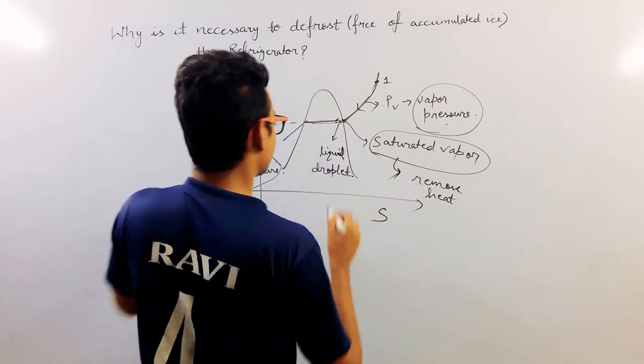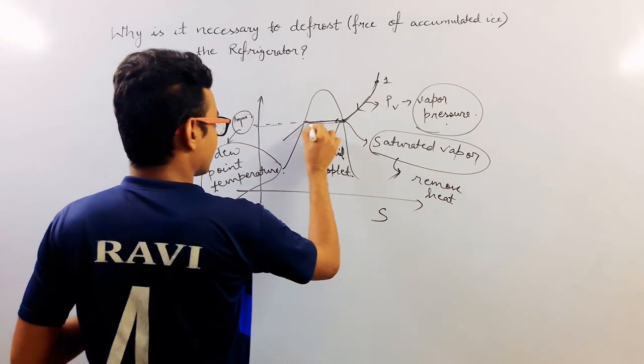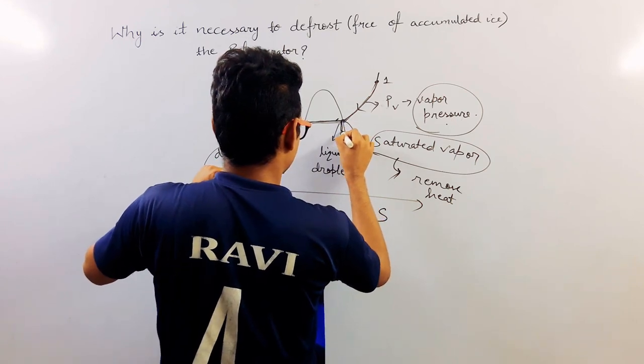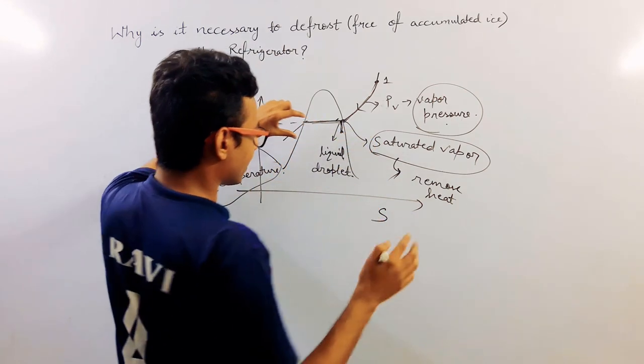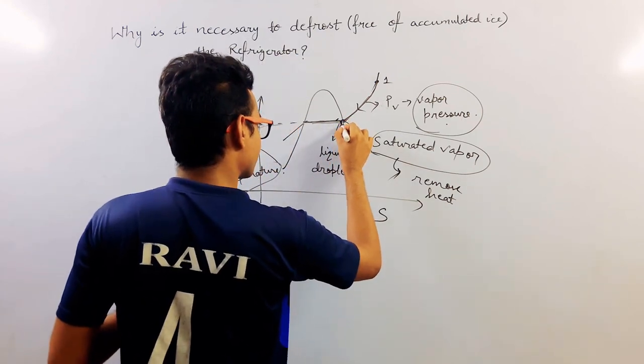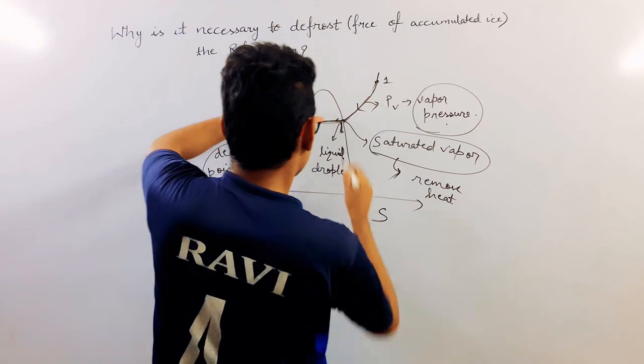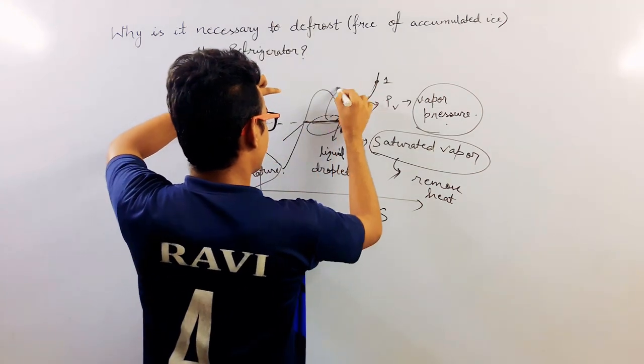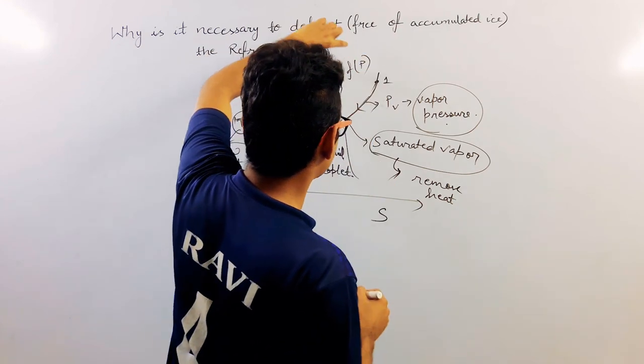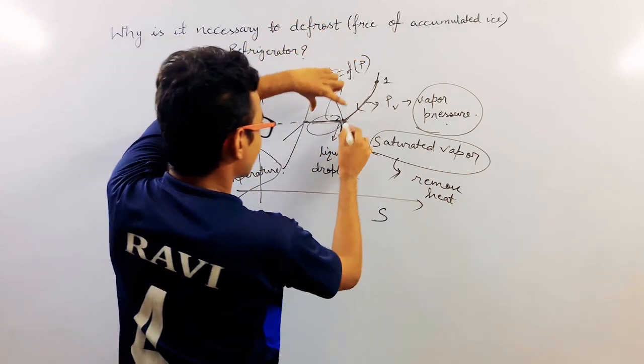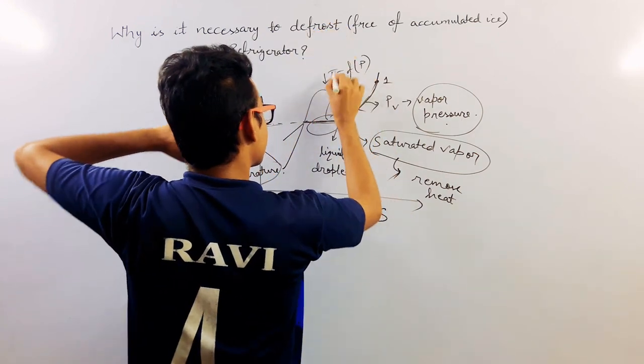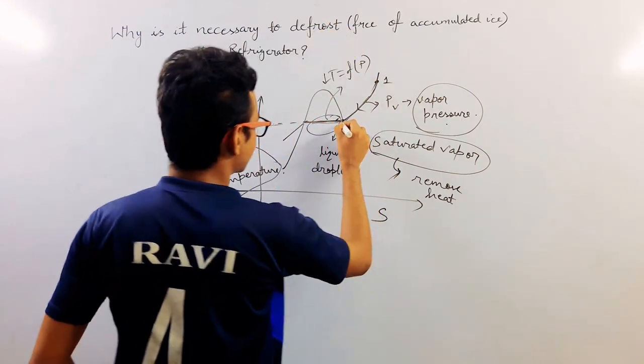So if you are going to decrease the temperature even further, then liquid will condense. That is, we will get liquid droplets. Because here, the temperature and pressure is a function of each other. Both are dependent upon each other. So we cannot make the pressure constant and decrease the temperature. Because if you are going to decrease the temperature, then obviously pressure will decrease. So we will shift below.